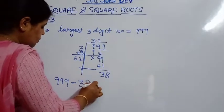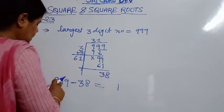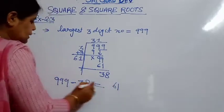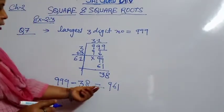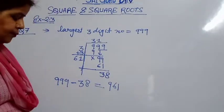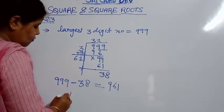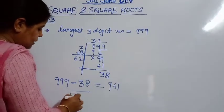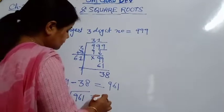999 minus 38. 9 minus 8 is 1, 9 minus 3 is 6. So the result is 961. Therefore 961 is the greatest 3-digit number which is a perfect square, and its square root is obviously 31.